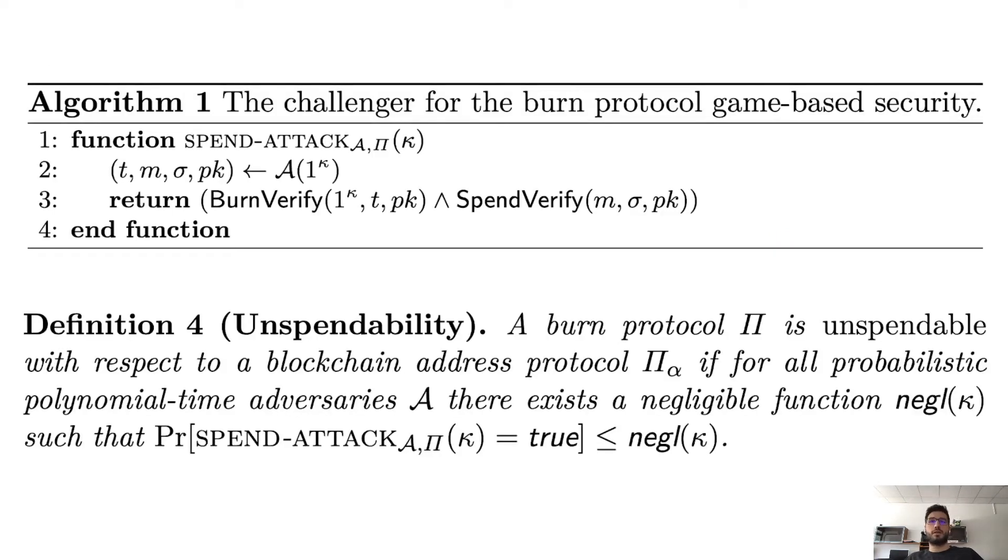This is more formally how this is defined, and we define basically a game for this. This is how SpendAttack works. We request from the adversary that they generate some tag and then an address and a transaction to go with it such that the address is a burn address for the tag provided. Then also the transaction spends coins destined to that address. So if this happens, then the adversary wins the game. What we say is that the protocol is unspendable if for all adversaries, all adversaries succeed with only at most negligible probability.